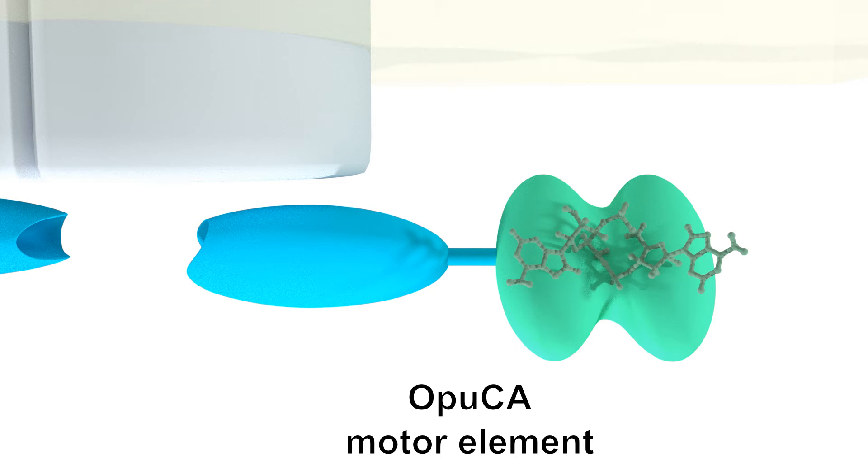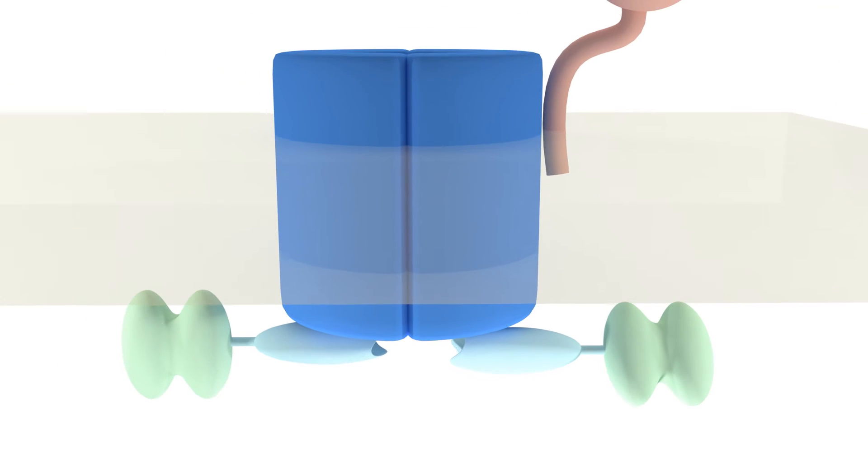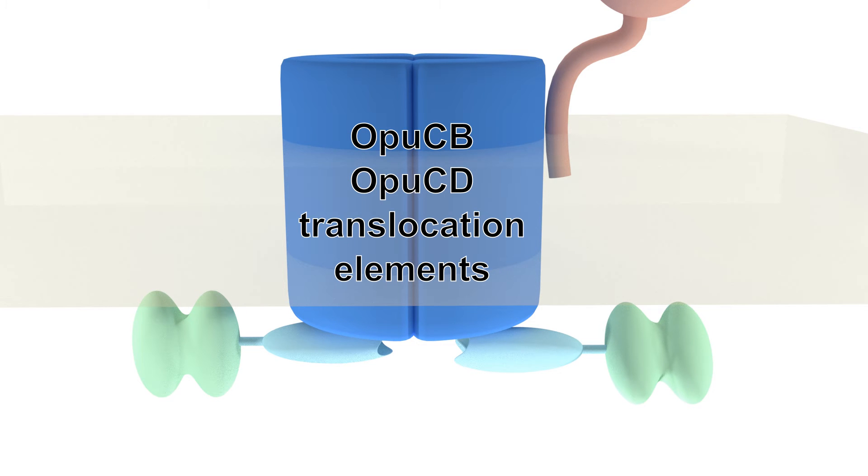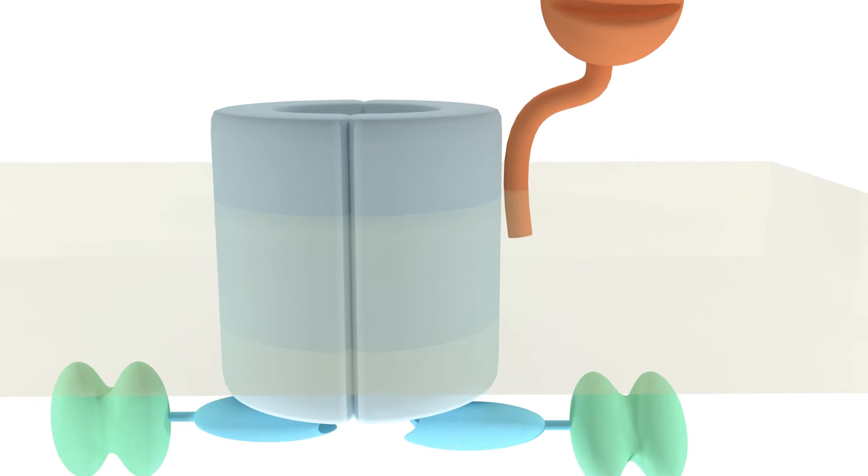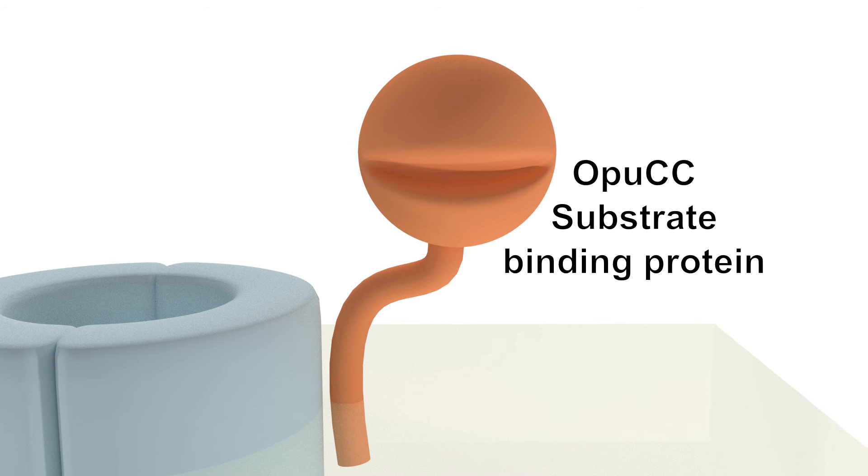The OPUC-ABC transporter consists of OPUCA, the ATPase component that provides energy for the transport, OPUCB and OPUCD, the main transporter components involved in translocation of the substrates, and OPUCC, the substrate binding protein responsible for the specificity.